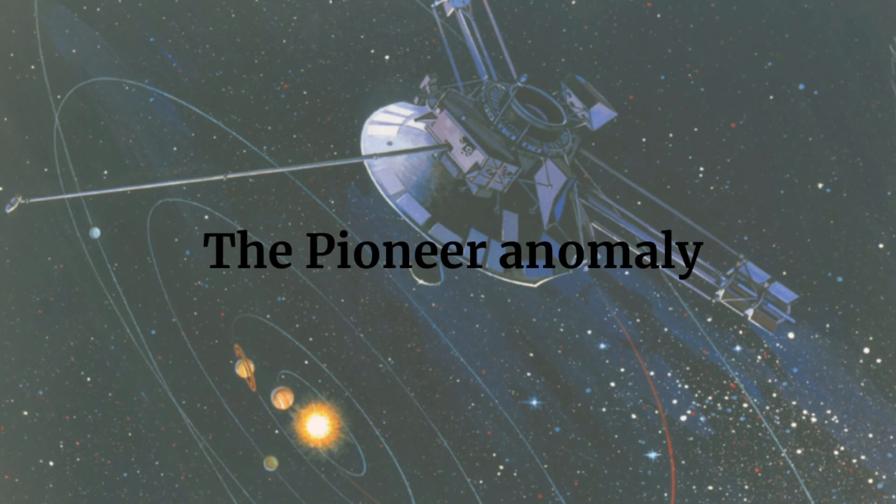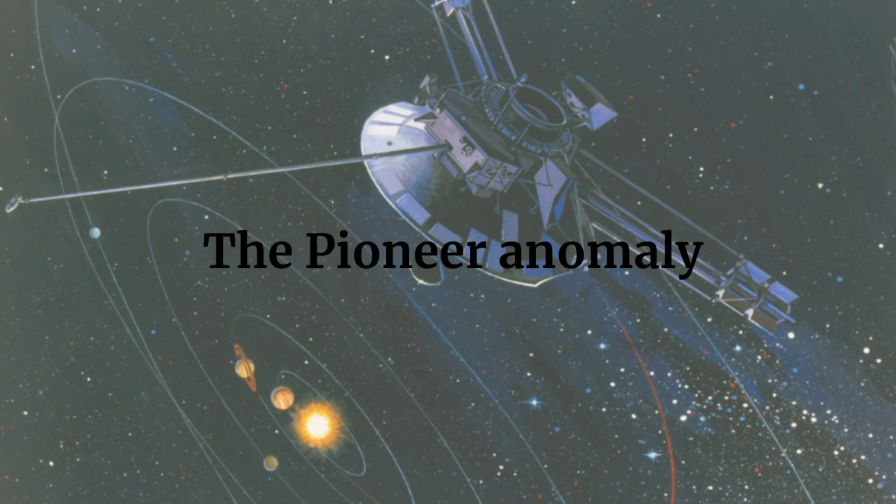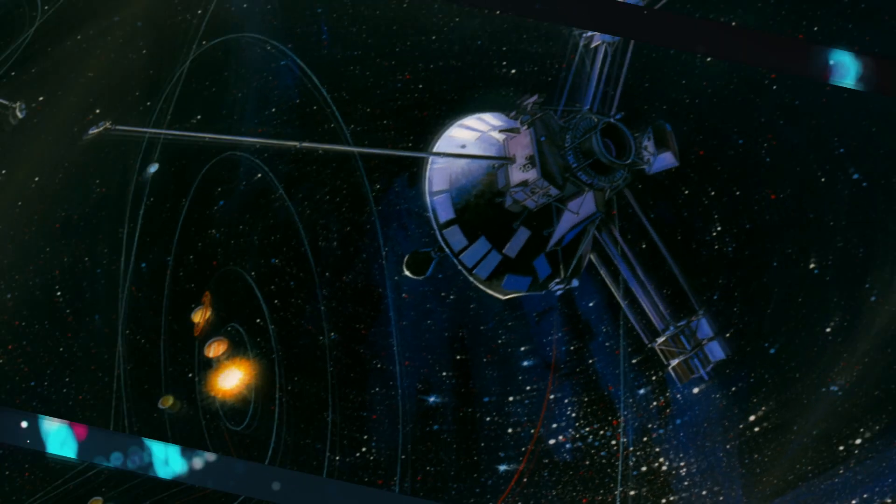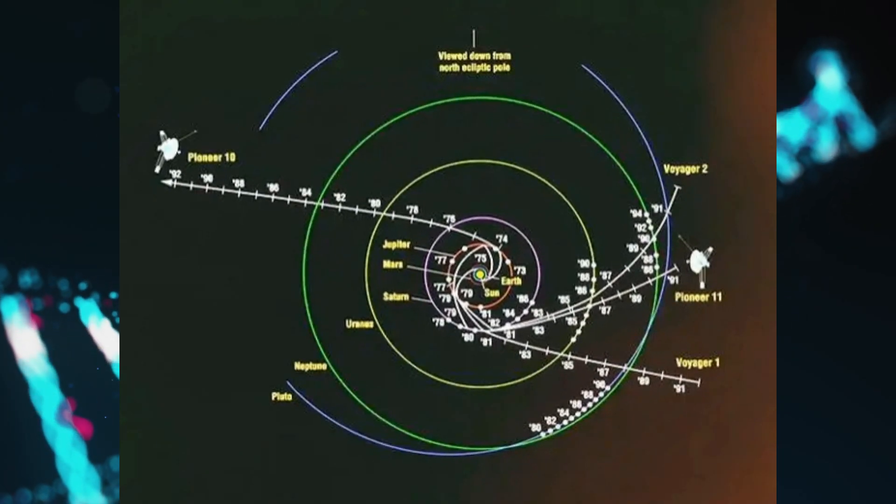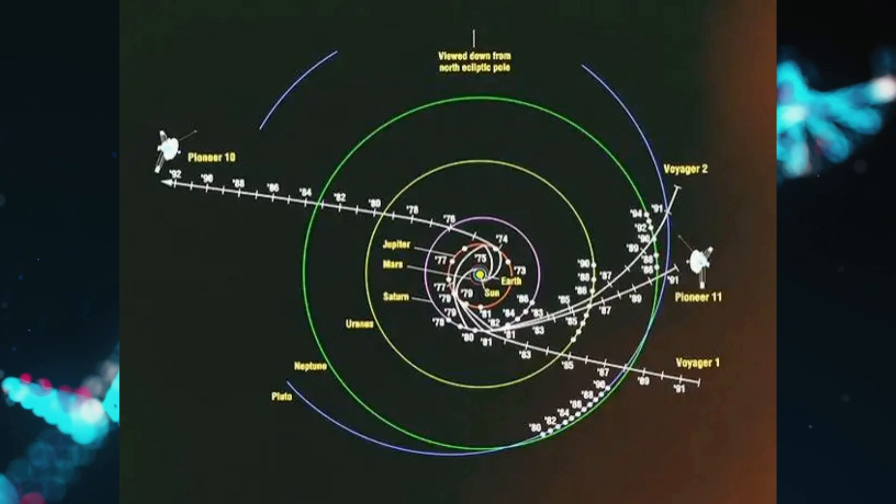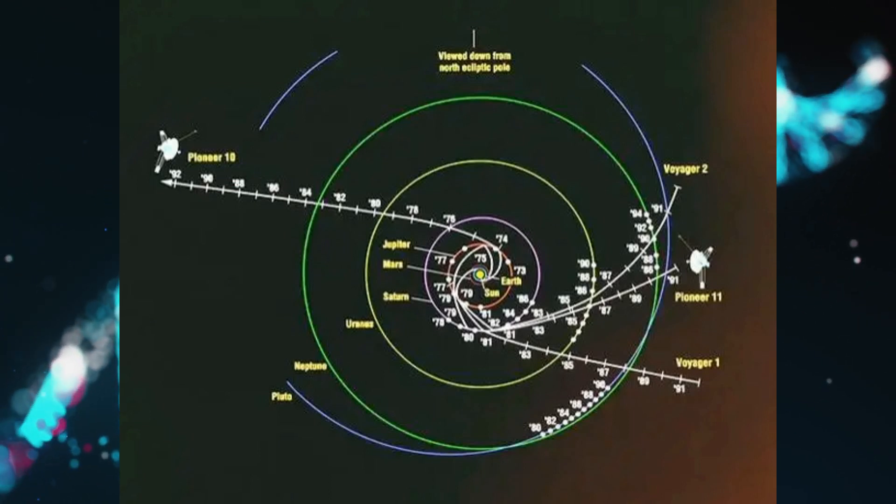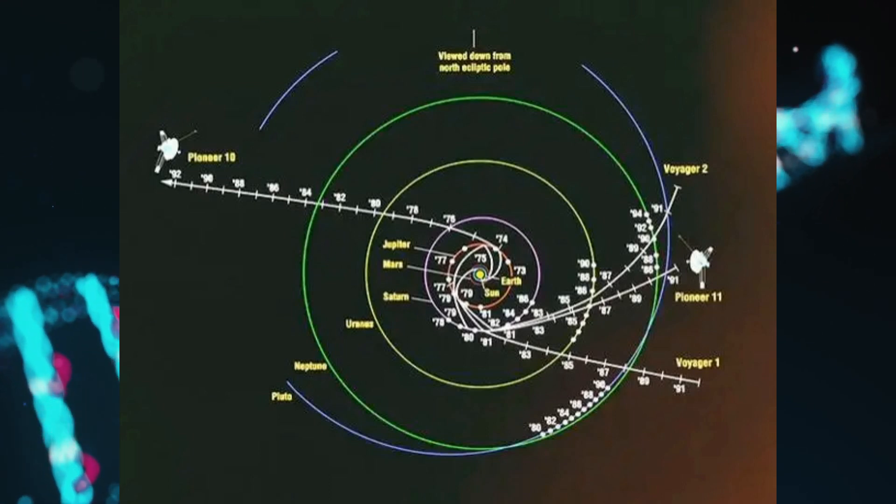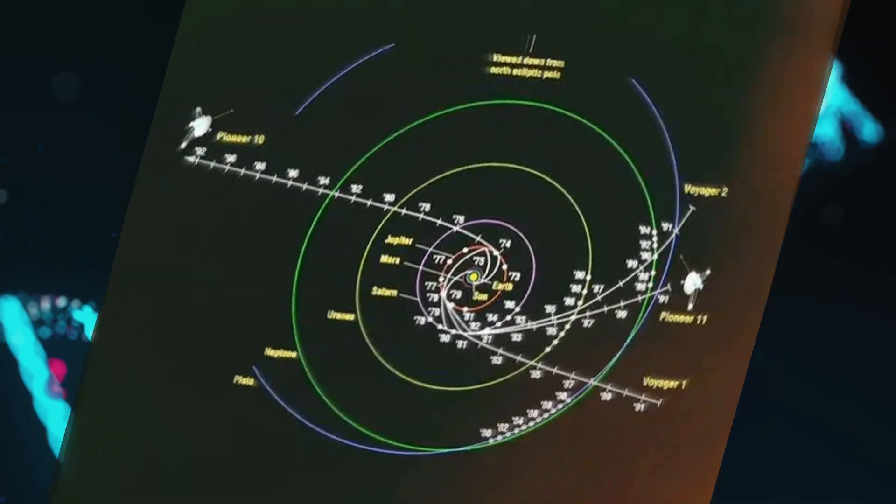Next fact would be about the pioneer anomaly. It refers to an unexplained deviation in the trajectories of the pioneer space probes as they traveled beyond the solar system. The pioneer anomaly, or pioneer effect, was the observed deviation from predicted accelerations of the pioneer 10 and pioneer 11 spacecraft after they passed about 20 AU in their trajectories out of the solar system.